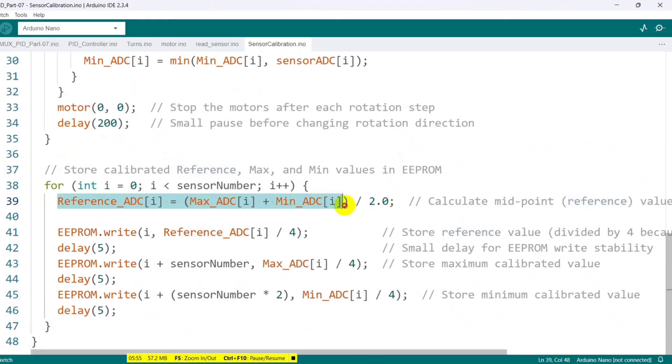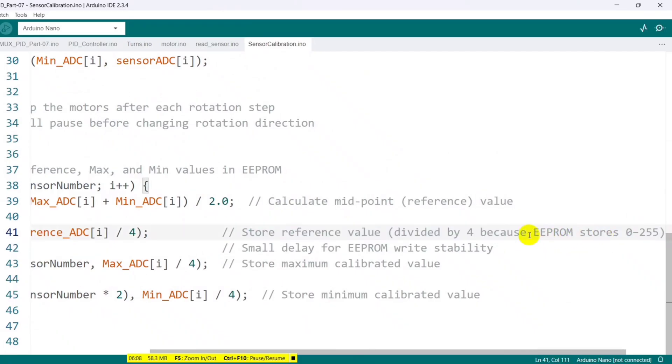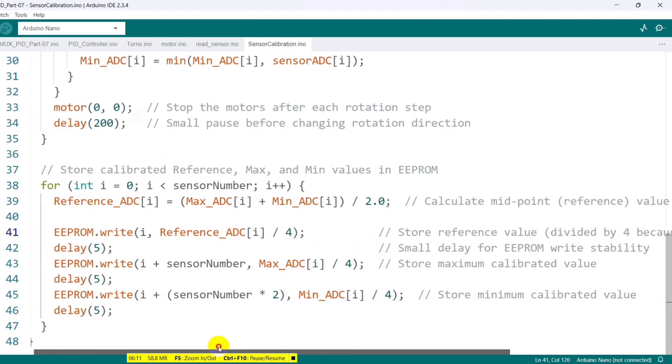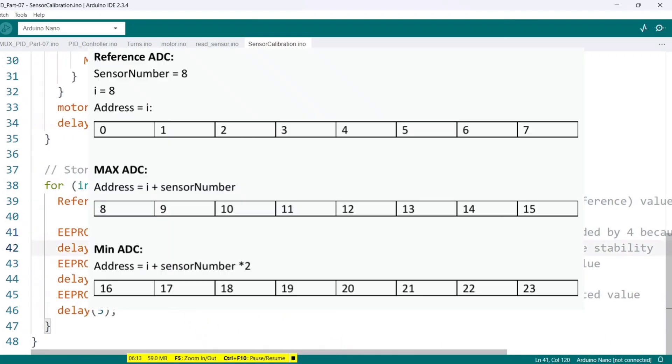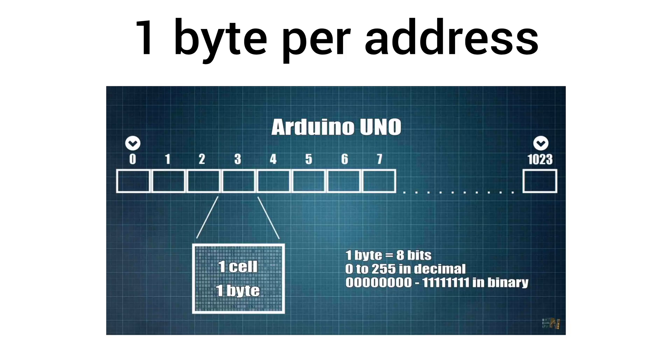Then, this part of the code calculates the reference value by adding the minimum and maximum values and dividing by two for analog to digital conversion. It then saves the maximum, minimum, and reference values to their corresponding EEPROM addresses using the EEPROM write function. I divide each value by four because analog readings can go up to 1023, but Arduino's EEPROM can store only up to 255.